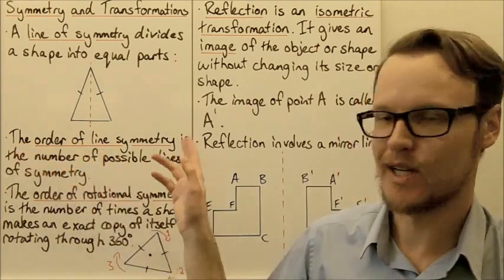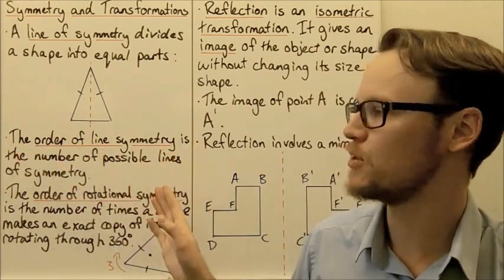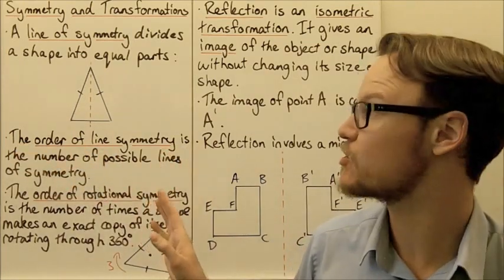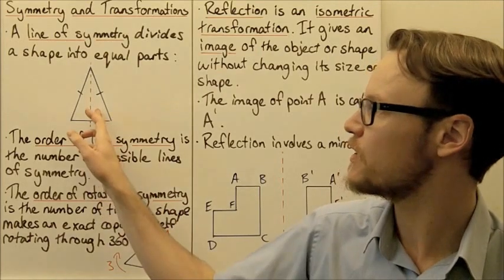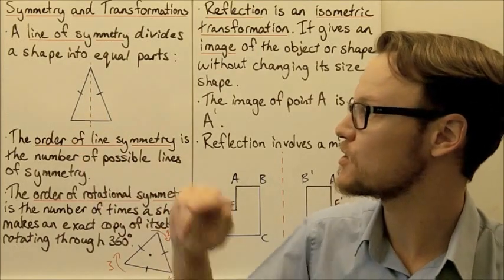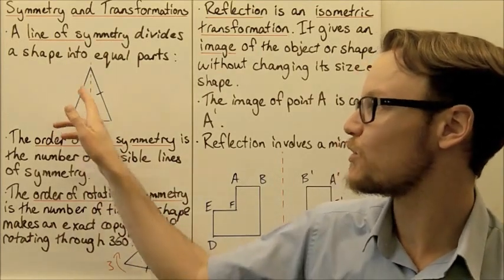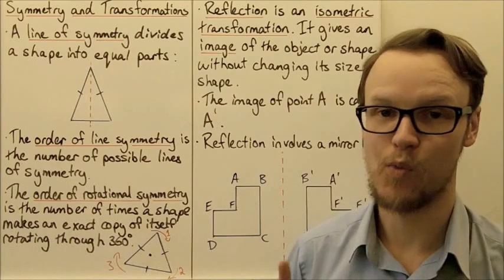The order of line symmetry is the number of possible lines of symmetry. So for our isosceles triangle, our order of line symmetry is one.